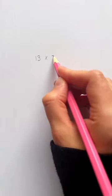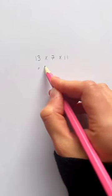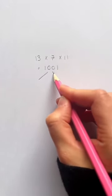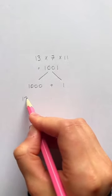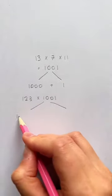But why does this work? Well, if we multiply 13 times 7 times 11, it'll equal to 1,001. And we can break 1,001 into 1,000 plus 1. So if we multiply 123 by 1,001,